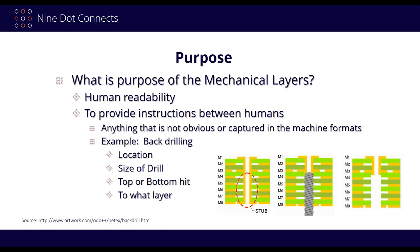We're trying to provide instructions between us and manufacturing. What I've found in processes — and I see this in a lot of processes, both in the ASIC world and the PCB world — is that we pass along information from step to step, but there are things we want to pass along and don't necessarily know where to put. We're kind of blessed that we have these mechanical layers, because if we don't pass it along, then assumptions get made, and that's where we're going to have problems.